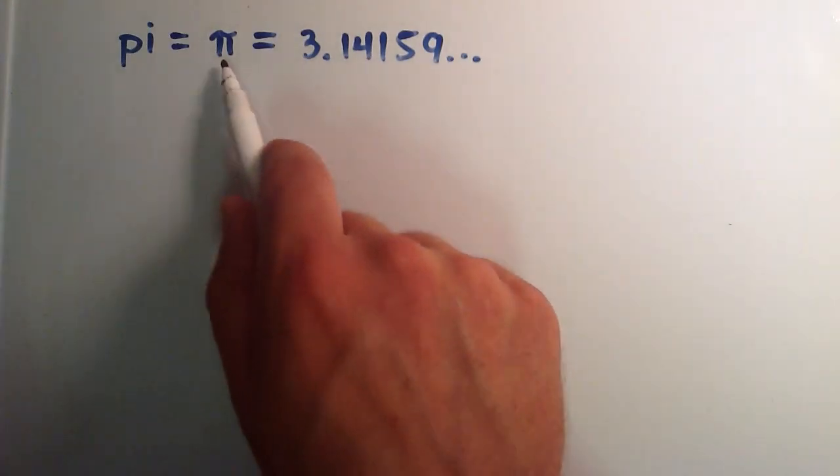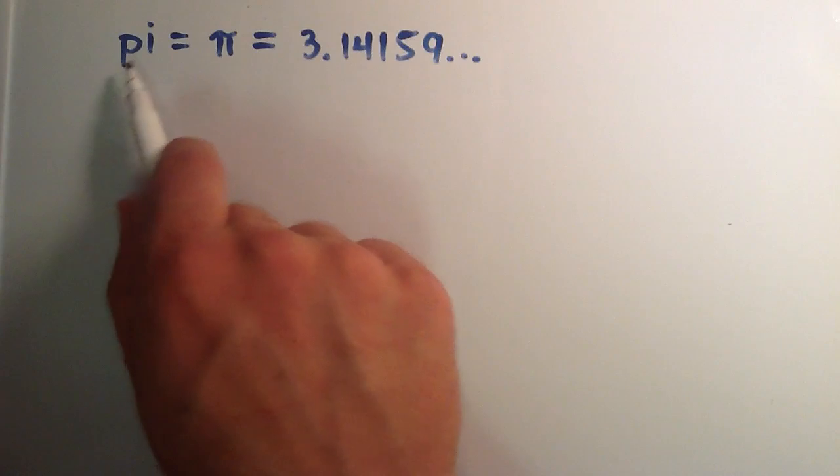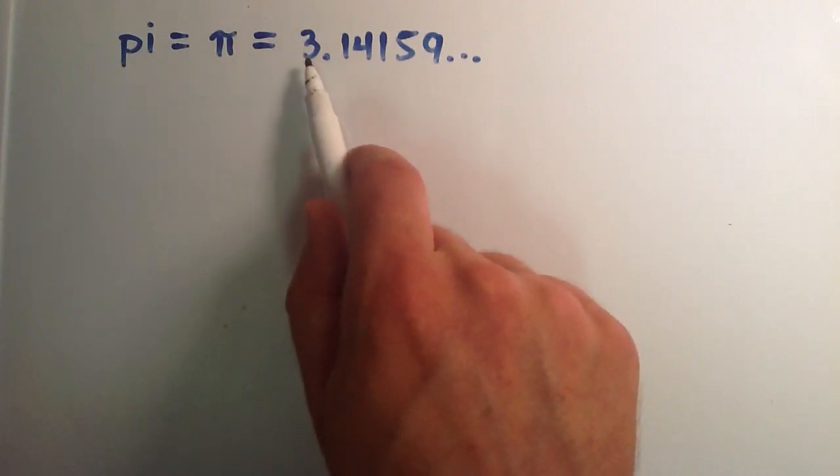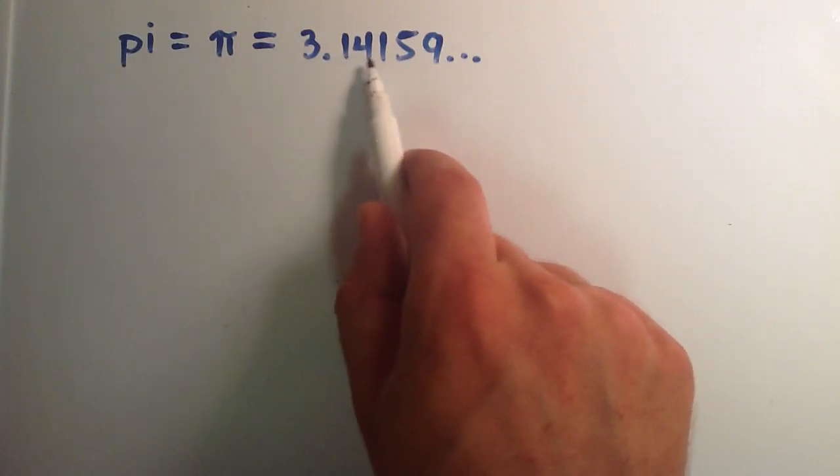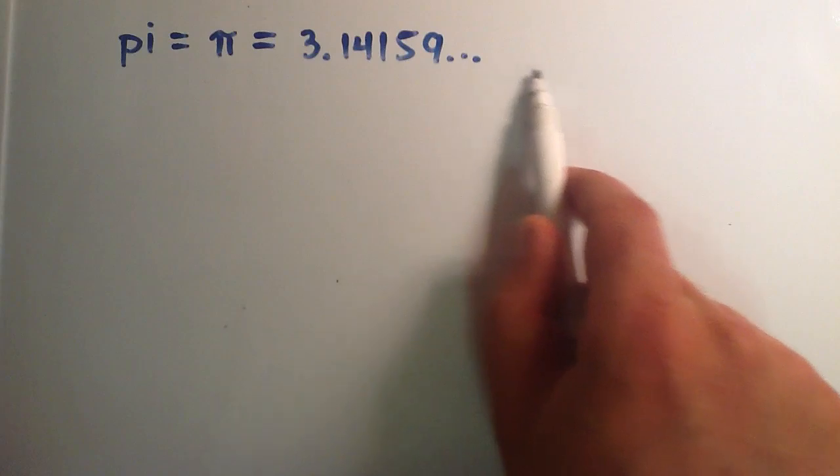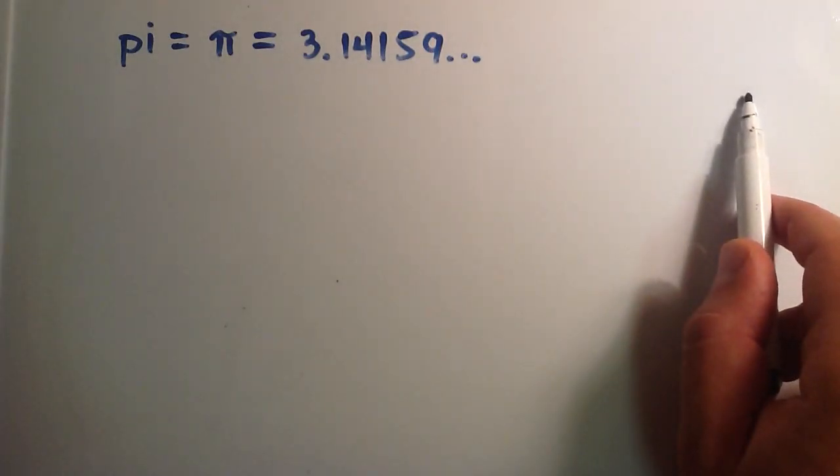Most of you probably recognize this symbol here. This is the Greek letter for pi, spelled pi. And it's equal to 3.14159 and then a whole bunch of other numbers that just keep on going forever.